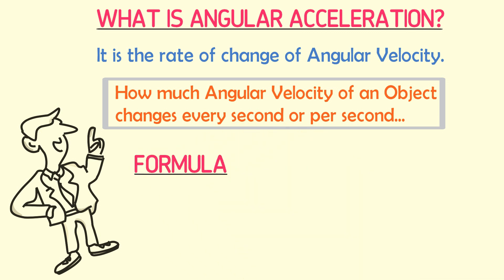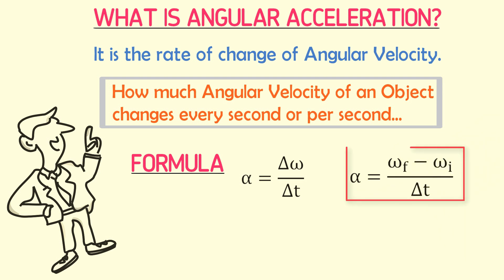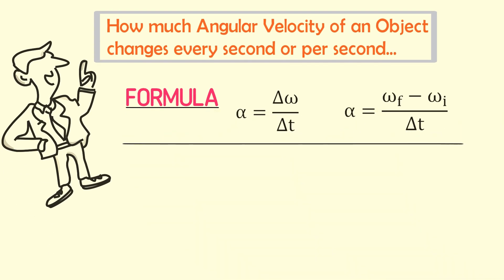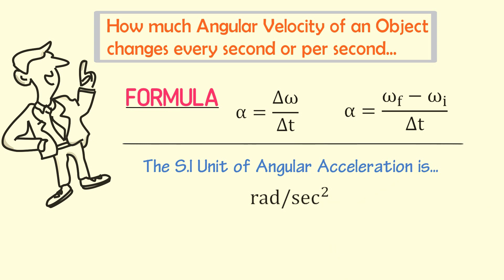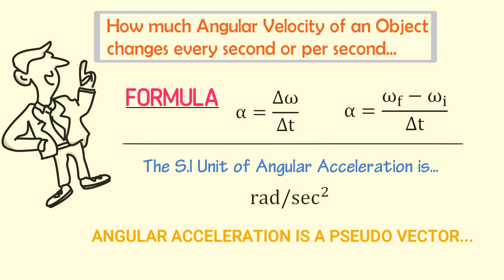The formula for angular acceleration is: alpha equals change in omega divided by change in time, or alpha equals final angular velocity minus initial angular velocity, divided by time. Angular acceleration is denoted by alpha. Its SI unit is radians per second squared. Angular acceleration is neither a scalar nor a vector quantity — it is a pseudo-vector, also called an axial vector.